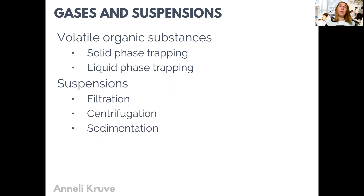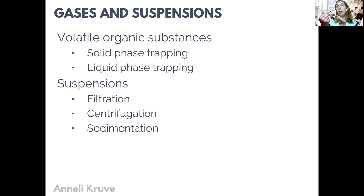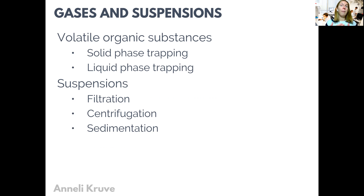In case of solid trapping, we can take the solid material that has now trapped our analytes and work further with it — either dissolving the compounds from this solid material, or heating it so that the analytes desorb and are guided, for example, to gas chromatography. In case of liquid-phase trapping, we could treat the sample as a liquid, performing concentration or purification steps and then analyzing it the same way we would with a liquid sample.